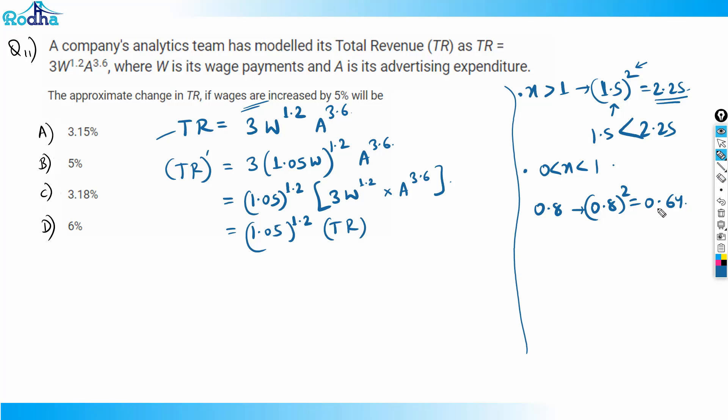On this simple concept, there are so many questions. So understand this: even if this is a very close case, this value is more than 1, this power is more than 1, so obviously 1.05 to the power 1.2 will be greater than 1.05. It will always be greater than 1.05.